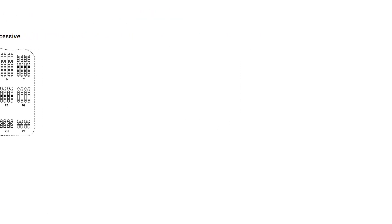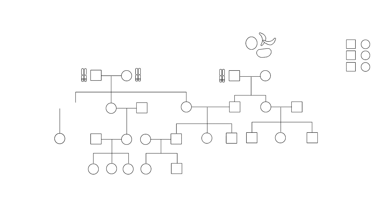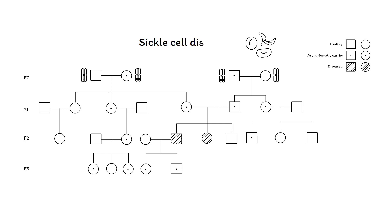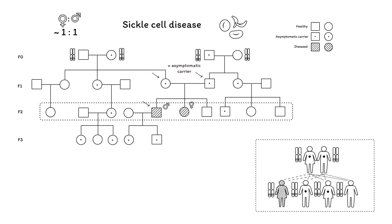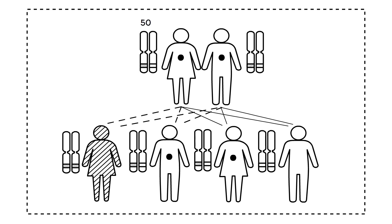Let's take a look at a family tree of an autosomal recessive disorder — for example, sickle cell disease. Both males and females are equally affected, but unlike a dominant inheritance pattern, an affected individual does not need to have an affected parent. The disorder often affects a whole generation, displaying a horizontal pattern in the family. The risk that a subsequent child will inherit the disorder from parents that are both asymptomatic carriers is 2 times 50%, which is a recurrence risk of 25%.